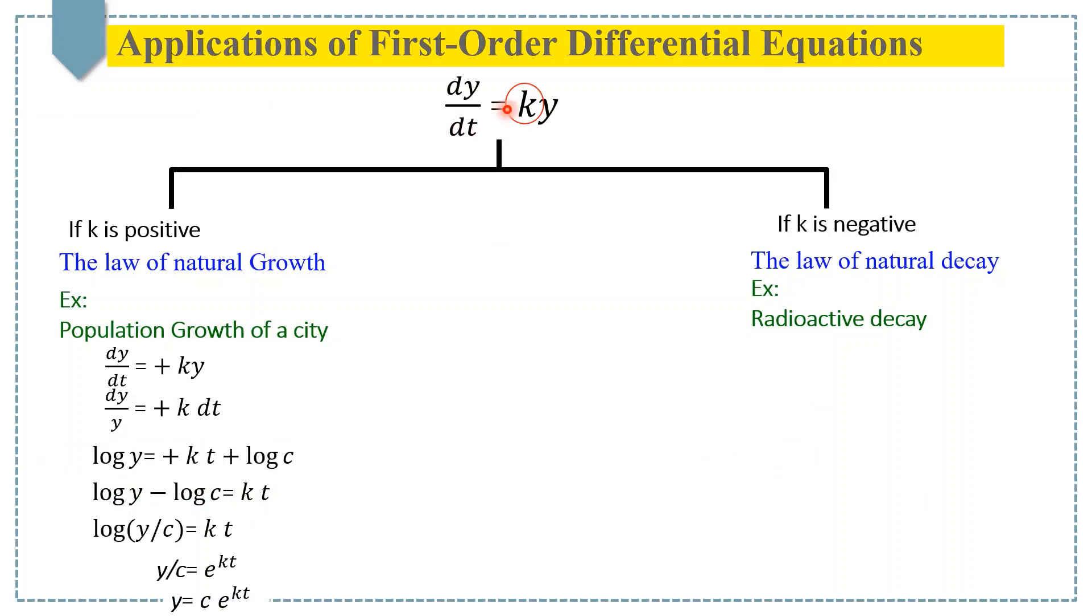Now, to find the solution of this differential equation, let's take this equation again and put the plus sign here to represent that k is positive. Keeping similar variables, for example y on the left side, we get dy/y = k dt.